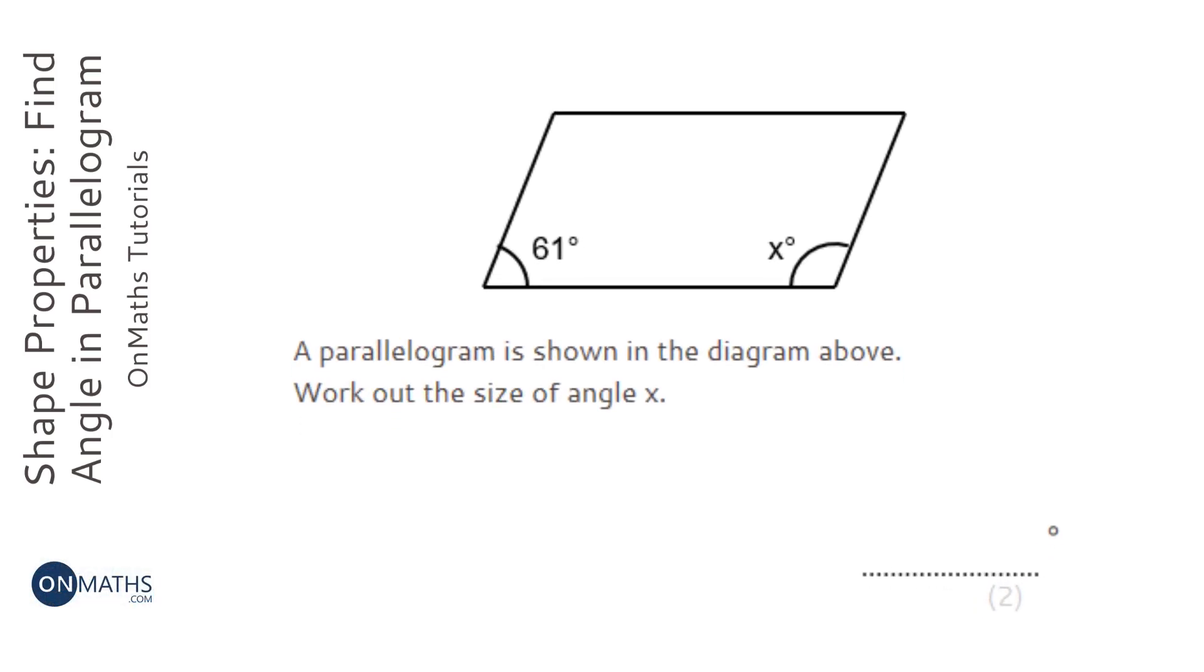We've got a parallelogram here, and a property of parallelograms is that opposite angles are equal. So this one is going to be x, and this one is going to be 61 degrees.